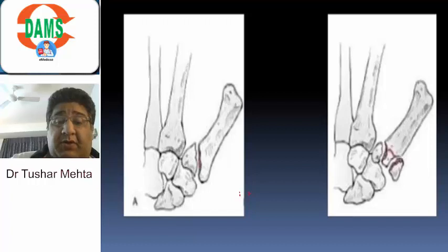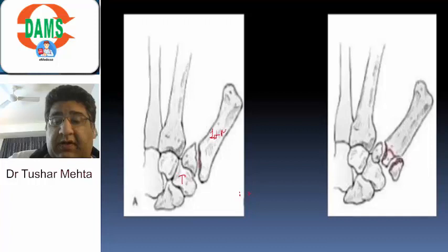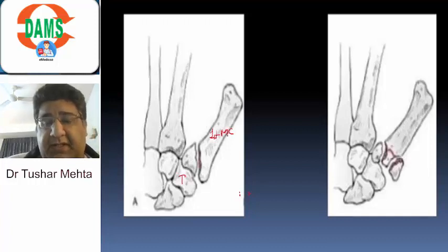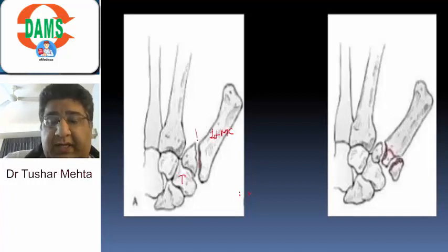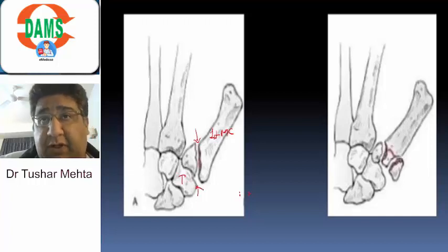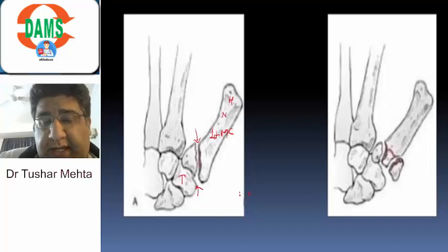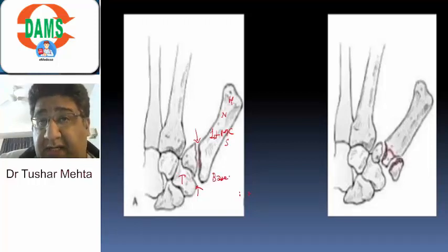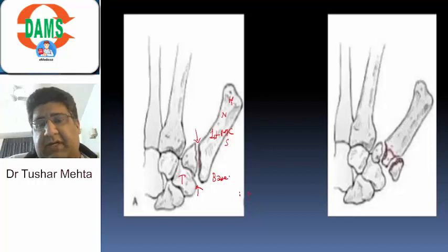We are dealing with a bone called trapezium and a bone called the first metacarpal. The fracture is quite evident in front of you, and believe me, it's not in the trapezium — it is in the first metacarpal. It's not in the head, not in the neck, not in the shaft. It is in the base of the first metacarpal.